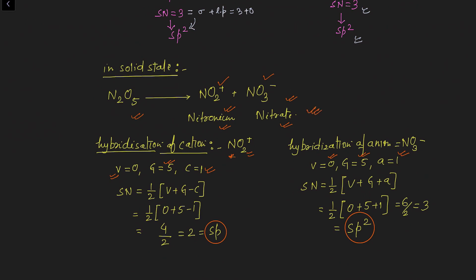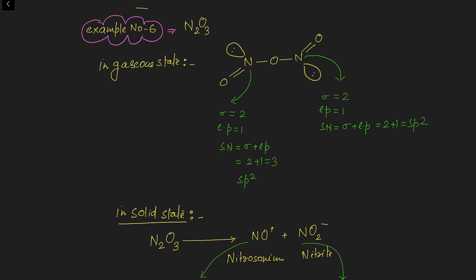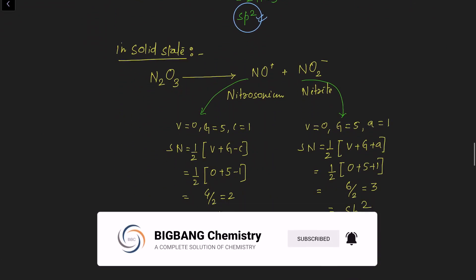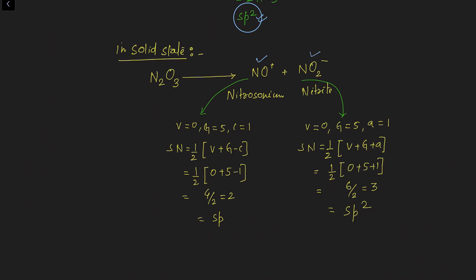Example six: N2O3 in gaseous state. Each nitrogen has two sigma bonds and one lone pair, so steric number = 3, and hybridization of each nitrogen is sp2. In solid state, N2O3 consists of two different ion types: NO+ (nitrosonium ion) and NO2− (nitrite ion), collectively called nitrosonium nitrite.